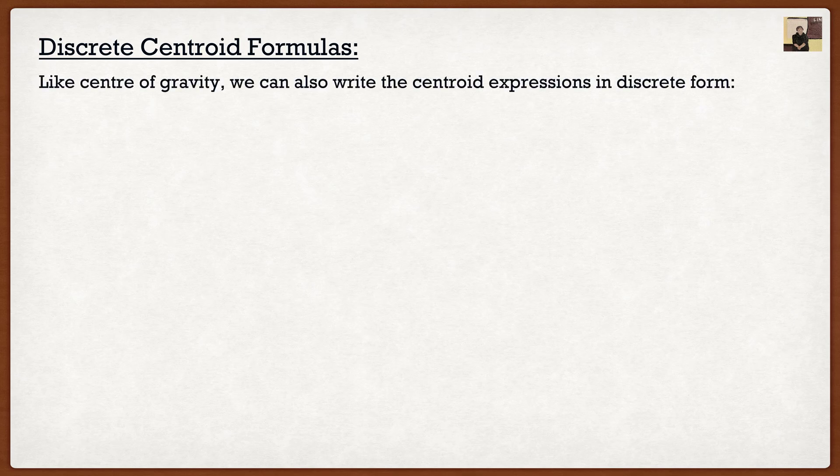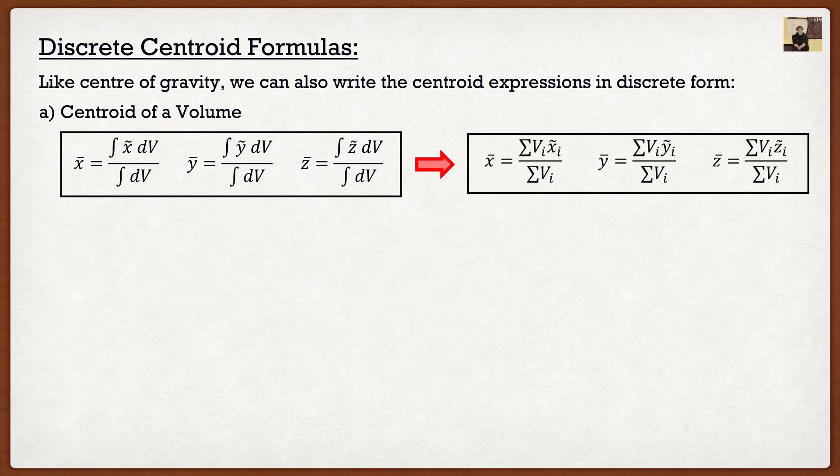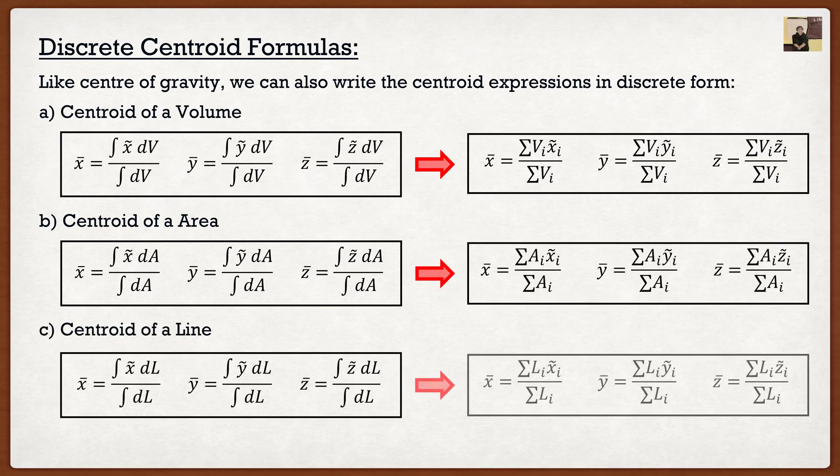So just like center of gravity, we can derive discrete form expressions. So for the centroid of a volume, we have the following expressions, but we can convert it into a discrete form as follows. So I just replaced the integral with the summation. And I can repeat this process for an area, and I can repeat this process for a line. Again, the only difference is you're replacing the integral with a summation.